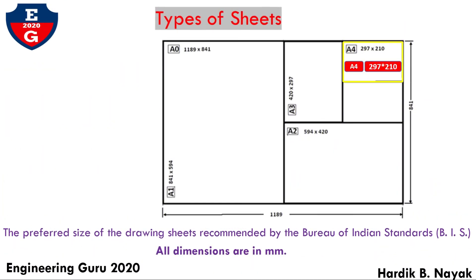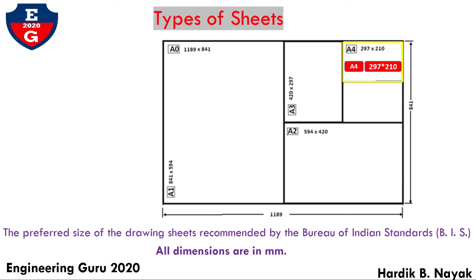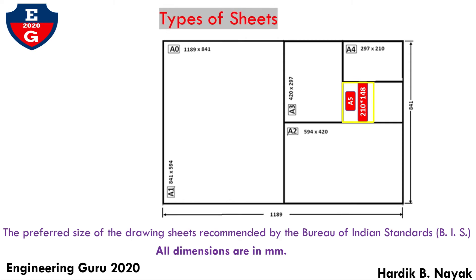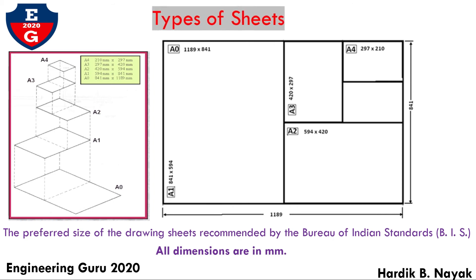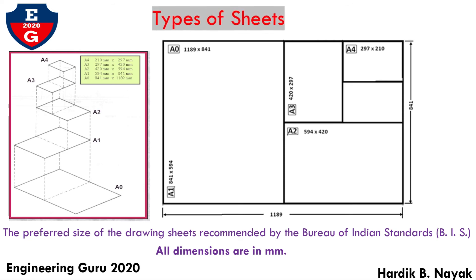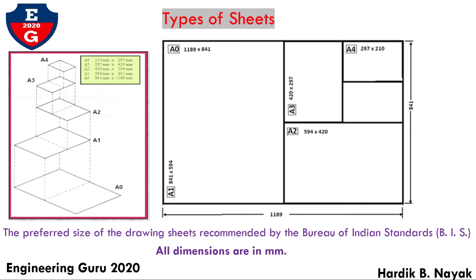Fifth, A4 size: length 297 mm and width 210 mm. Sixth, A5 size: width 148 mm. You can see on the screen by yellow line. The surface area of A0 size is 1 square meter. Successive format sizes from A0 to A4 are obtained by halving along the length or doubling along the width. The sides are in the ratio 1 to √2, as seen in this figure.